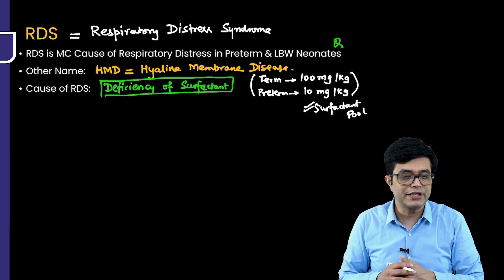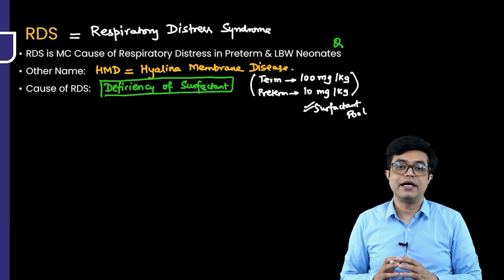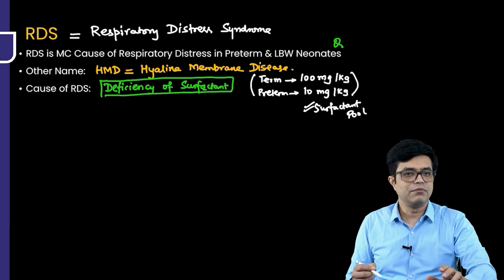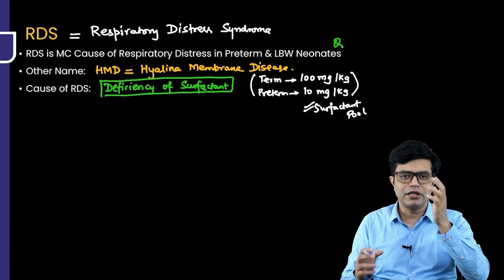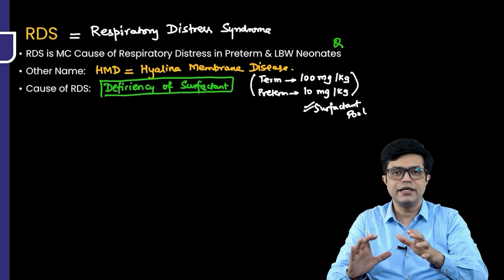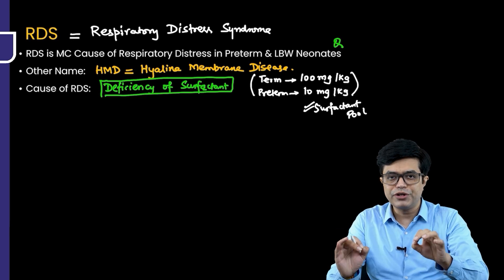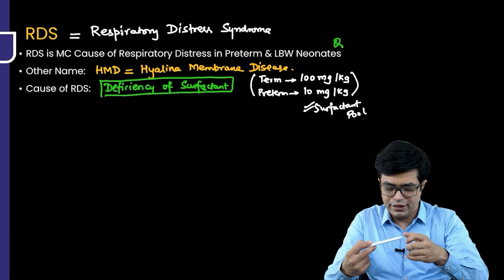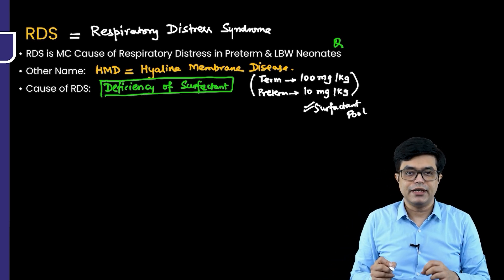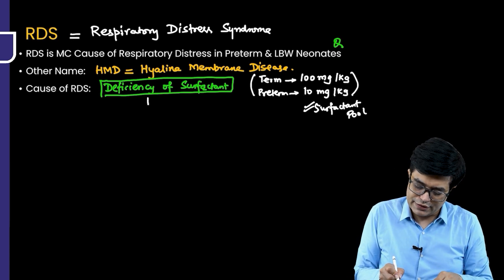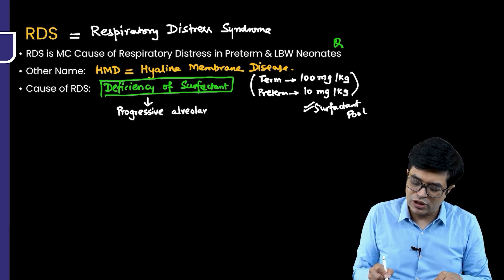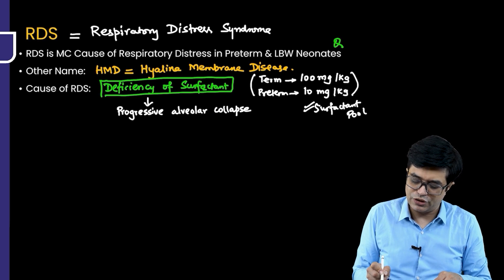Because the amount of surfactant in alveoli is 10 times less in preterm babies, there is a higher chance of progressive alveolar collapse. The pathophysiology can be explained in multiple ways — I will show a handmade chart based on the AIMS protocol, Nielsen, and Cloherty. In RDS, there is deficiency of surfactant, leading to progressive alveolar collapse. This progression is gradual — not all alveoli collapse suddenly.